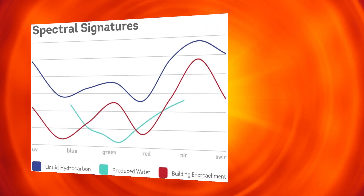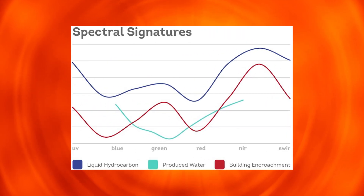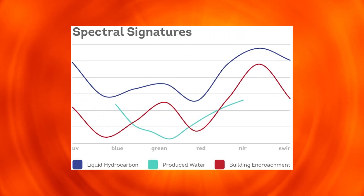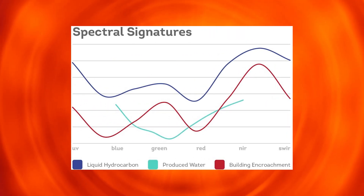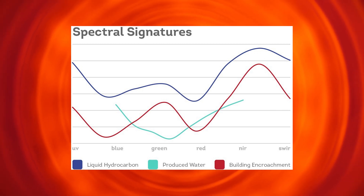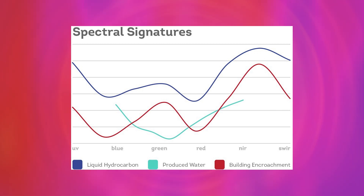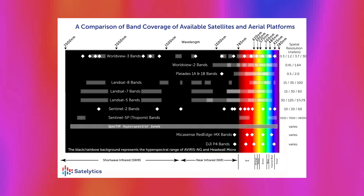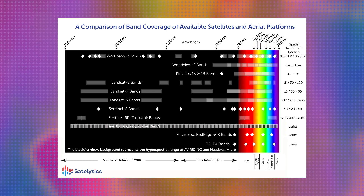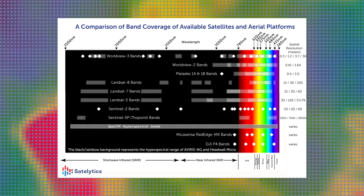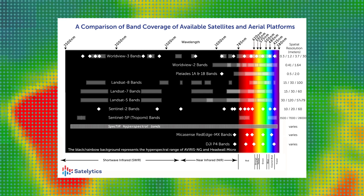Satelytics relies on distinct and distinguishable spectral signatures inherent in the light reflected off chemicals and physical phenomena for which we analyze. Many of the unique points in the spectral signatures are found in the near-infrared and shortwave infrared portions of the electromagnetic spectrum.